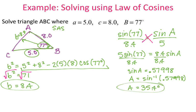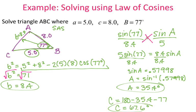Now I have all three sides and two of the three angles. I can solve for angle C since angles in a triangle add up to 180 degrees. So angle C = 180 − 35.4 − 77 ≈ 67.6 degrees. The triangle is now fully solved.